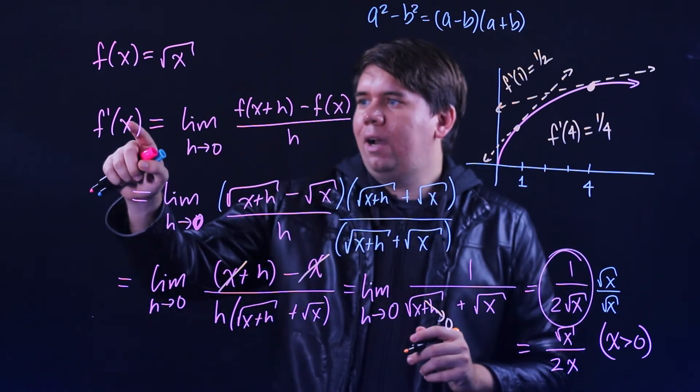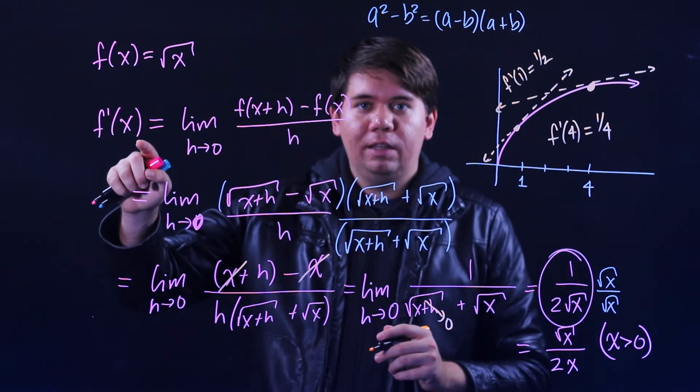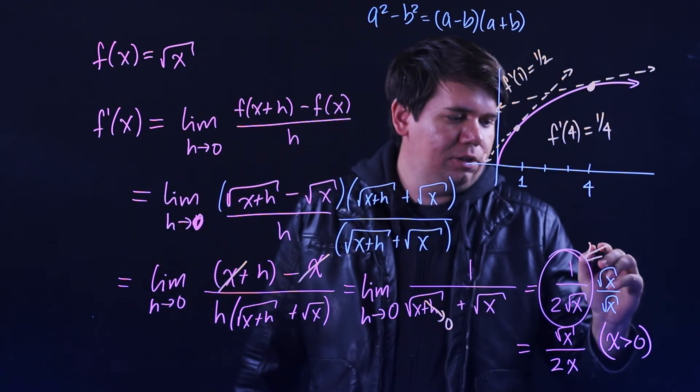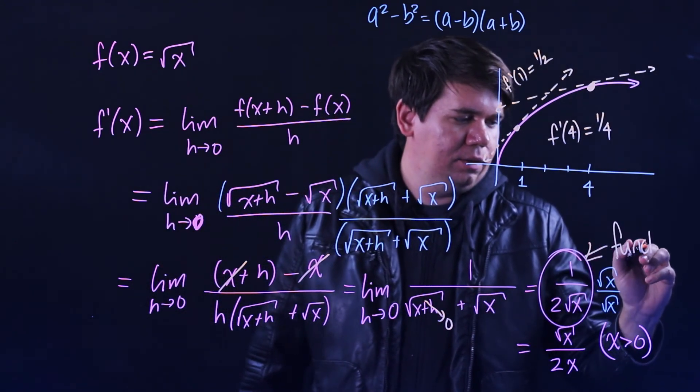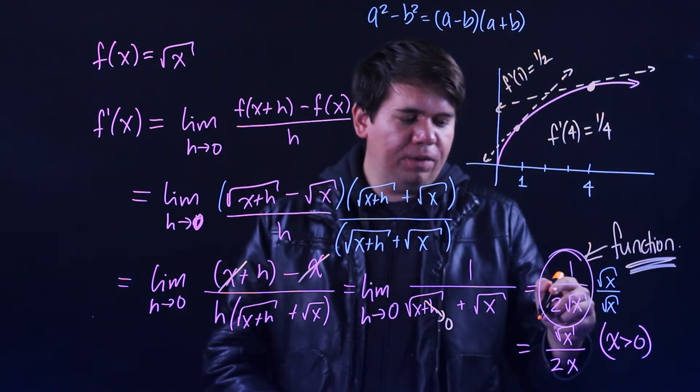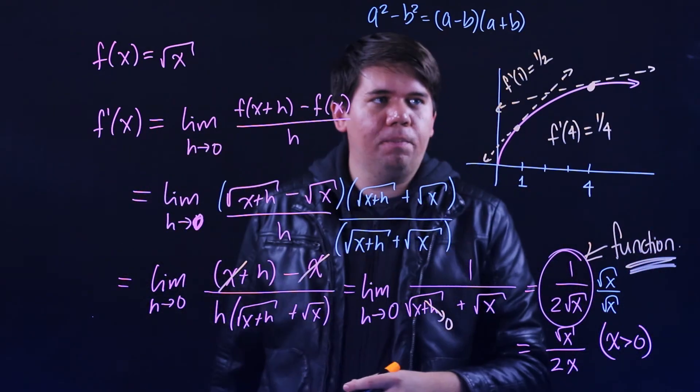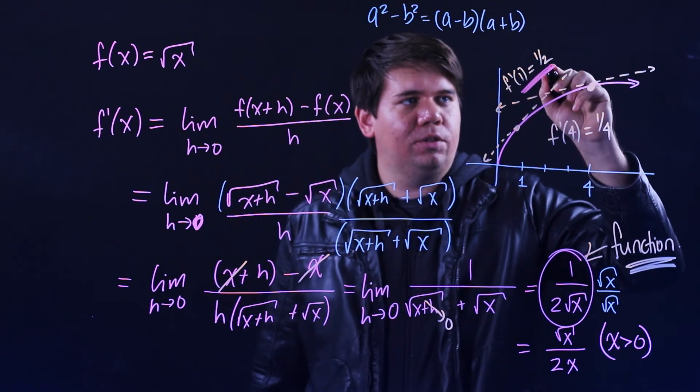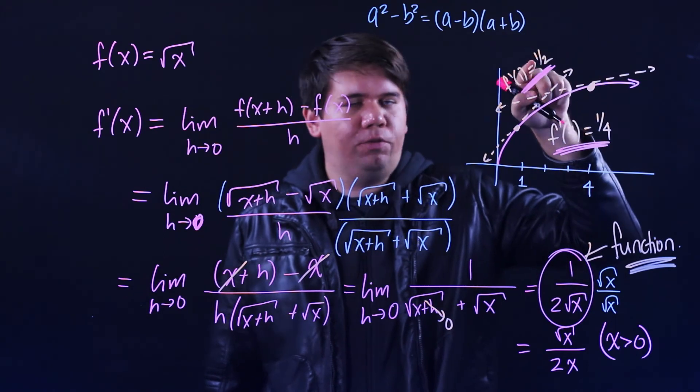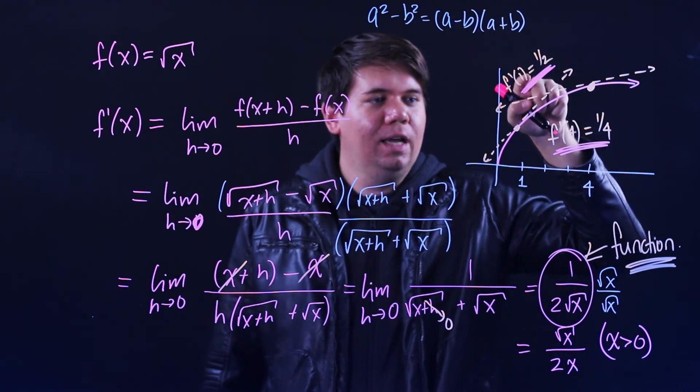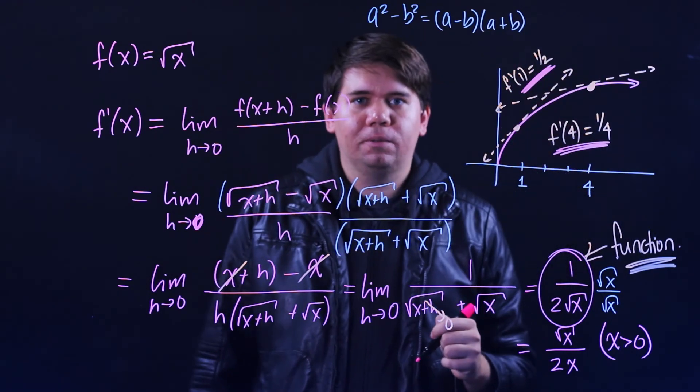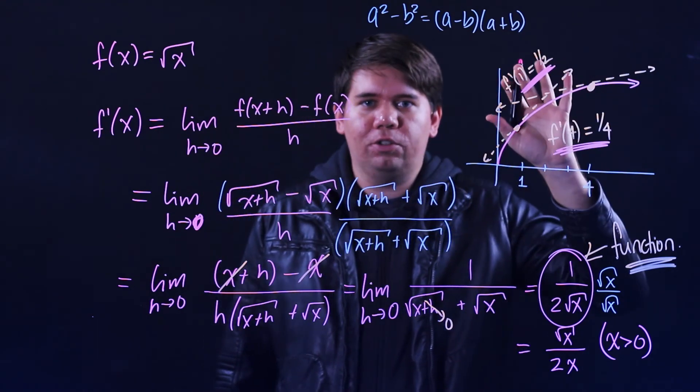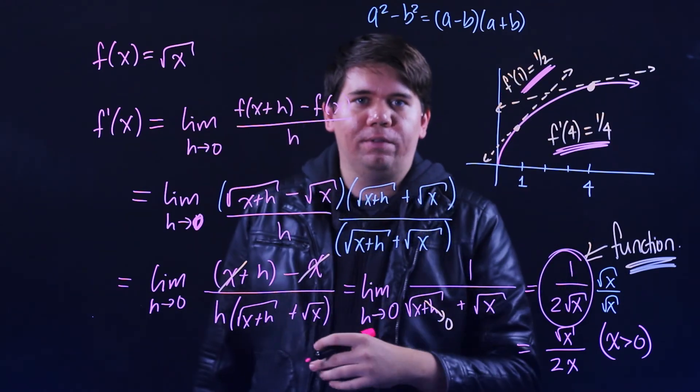So there we have it, we can calculate the derivative in general. Notice when you calculate in general what you get out is a function. Whereas each of these are particular values, these are numbers, particular values for the particular slope of the tangent line at particular points. And we have this nice geometrical interpretation of what is going on with the derivative.